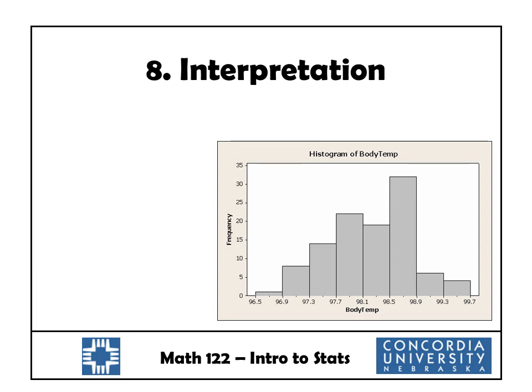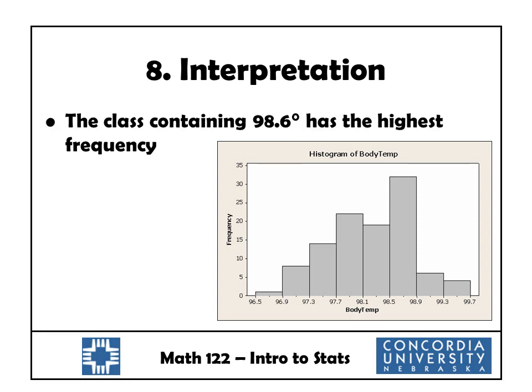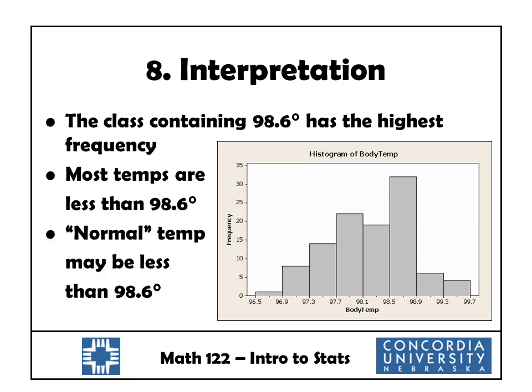The last step is the most important one — that's where we actually interpret the histogram. We don't want to draw a graph just for the sake of drawing a graph; we want to better understand what the data is telling us. First, the class containing 98.6 has the highest frequency. We can see that 98.6 is between 98.5 and 98.9, and that class has the tallest bar, which is what we'd expect if normal really is 98.6. However, note that most of our temperatures are less than 98.6 — we have many bars below that tall one, and only two short bars above it. So our data indicates that normal temperature may be less than 98.6.